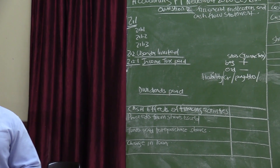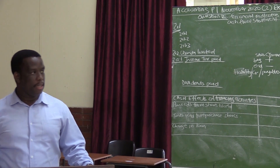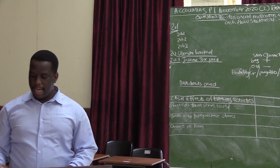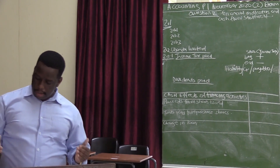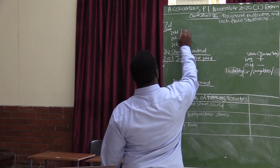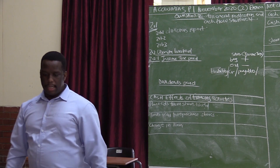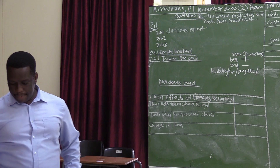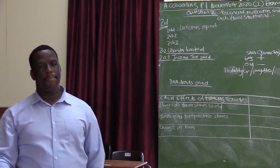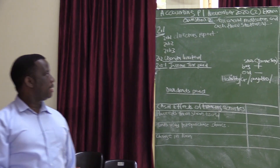2.1.1: Director's Report or Audit Report? We need to choose between the two. It gives an explanation of the operations of the company during the financial year. Remember, the Audit Report is the report issued by the Independent Auditors after they have audited the financial statements. So the report that gives an explanation on the operations of the company is the Director's Report.